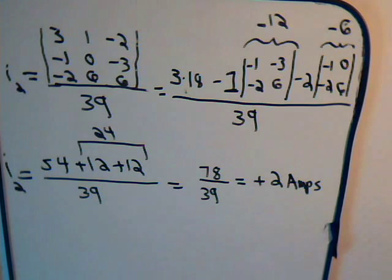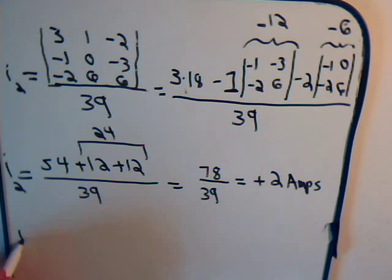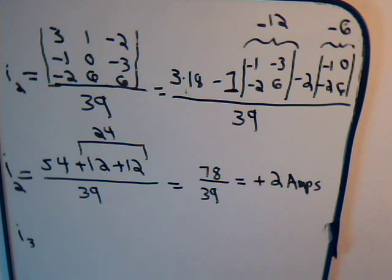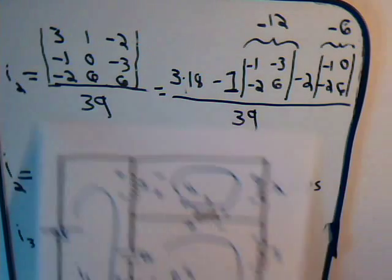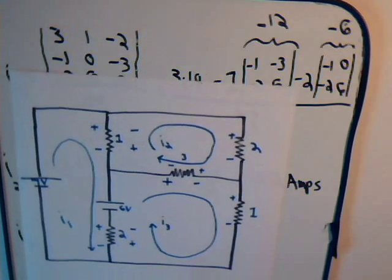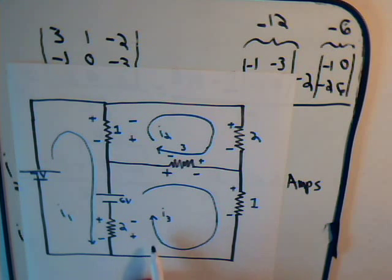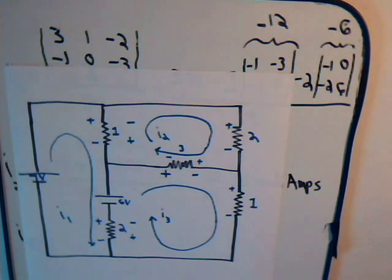That's the second current, I2 = 2 amps. We won't have time to determine I3 in this video, so join us for the next video where we'll quickly find I3, then apply all the values back to the circuit and finish the rest of the problem.